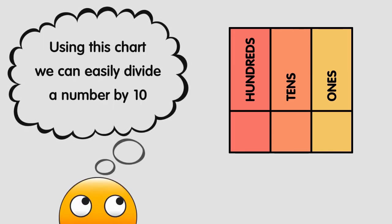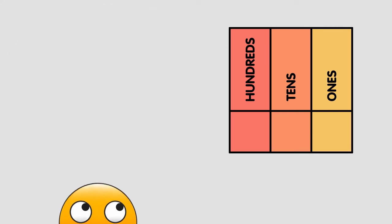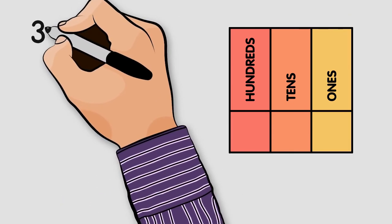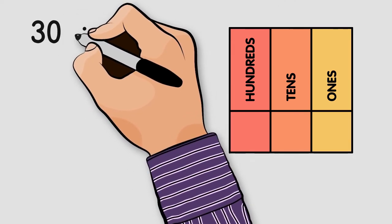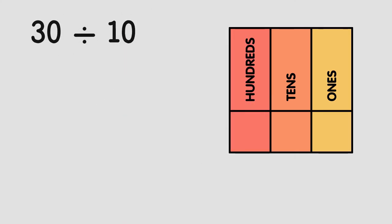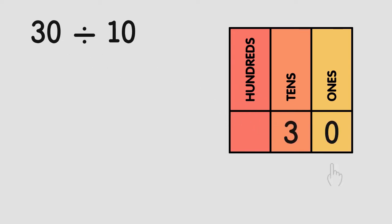Using this place value chart, we can easily divide a number by 10. Let's use it to look at one of the numbers we already tried — 30 divided by 10 again. When we place 30 into our chart, we have zero ones and three tens, which is 30.